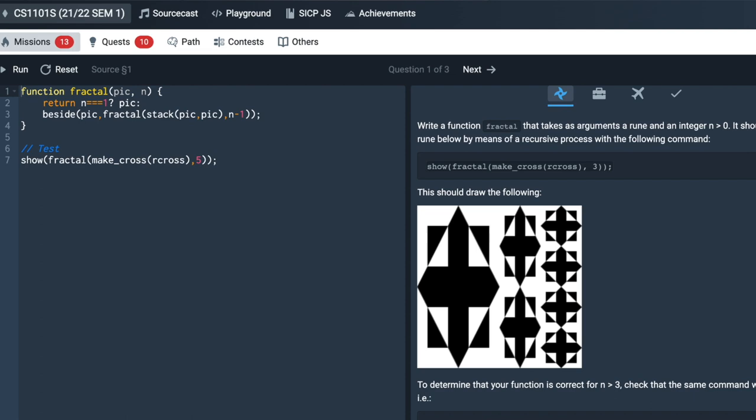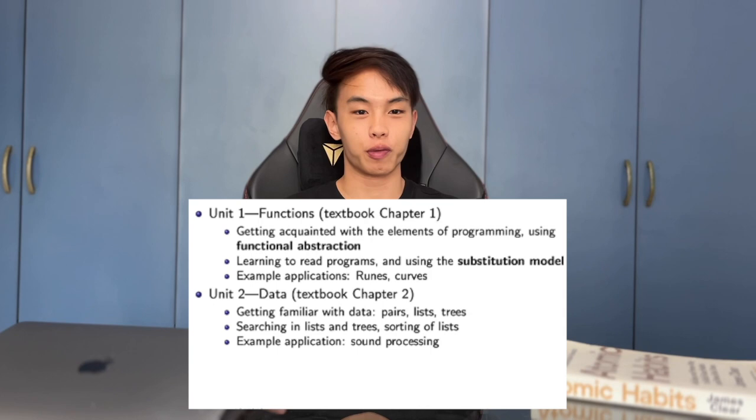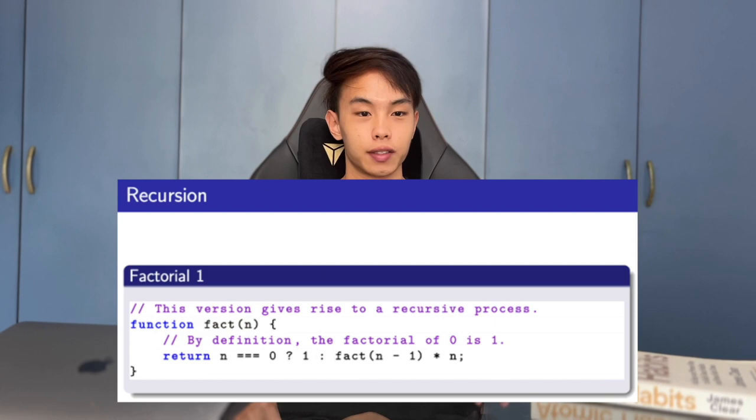For example, this is a mission where I'm supposed to construct the following image using a fractal recursive function. So this is a quick overview of what is covered. The first half of the semester, chapters 1 and 2, deals with immutable data types, where variables are constants and cannot be changed during the execution of the program. To achieve this, concepts such as recursion are taught. After this module, you'll be very well acquainted with recursive functions.